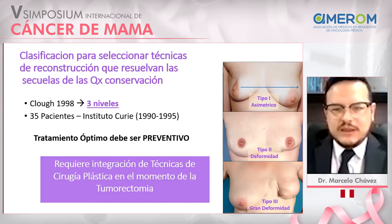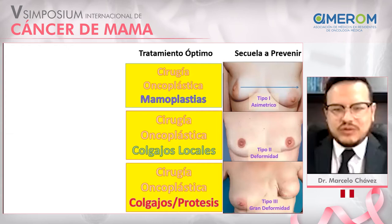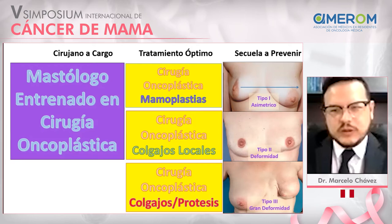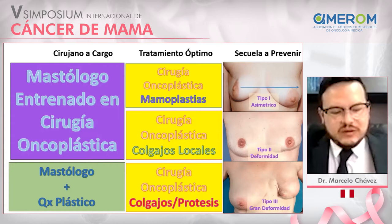Planification of the resection is very important for breast surgeons. For level 1 and level 2 asymmetries, we can perform local flaps, doing breast surgery and oncoplastic surgery. But for level 3, we need the help of plastic surgeons in order to achieve reconstruction of the breast.